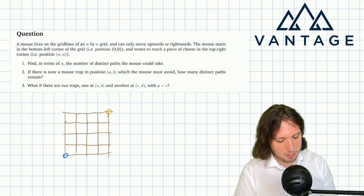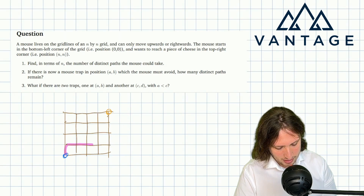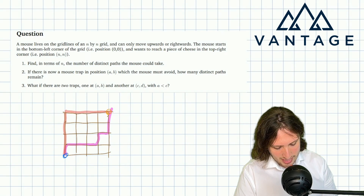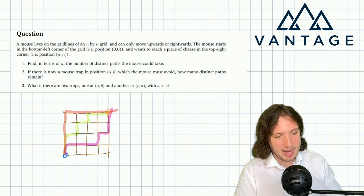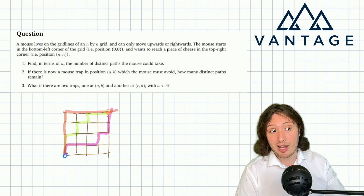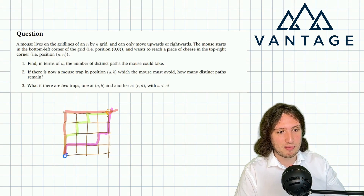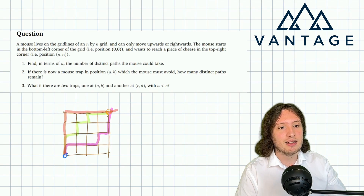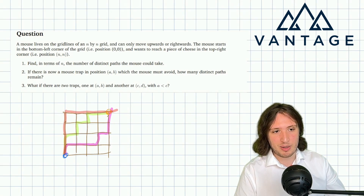In the 4x4 case, the mouse starts down here and wants to get there, moving along grid lines in an up or right direction. Some examples of legal paths would be like this, or like that. Even for small n it's clear there are loads of different paths, which makes the counting intimidating. Certainly for general n we have no hope of just listing things, even if we try to be systematic.